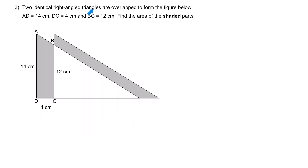Question three: two identical right-angle triangles are overlapped to form the figure below. AD equals 14 cm, DC equals 4 cm, and DC equals 12 cm. Find the area of the shaded parts. On first look this question might seem impossible, especially since you need to find these odd trapezium shapes which are not part of the syllabus. The only way to find the answer is to have a deeper analysis — the key is that there are two identical right-angle triangles.